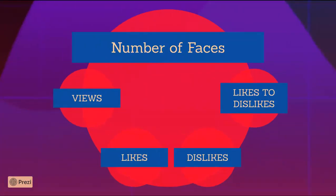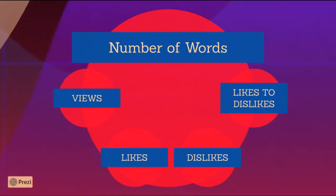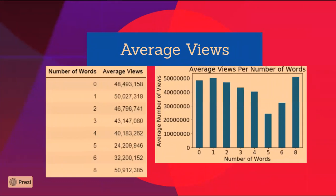Then I plotted the video metrics for each number of words. The first plot is average views per number of words. With the exception of 8 words, the general trend is that the more words shown in the thumbnail, the lower the average number of views. There's only one video with 8 words — when he spent 24 hours straight at Area 51 — and only one video with 5 words, so we can treat those as outliers. In any case, the general trend still holds.